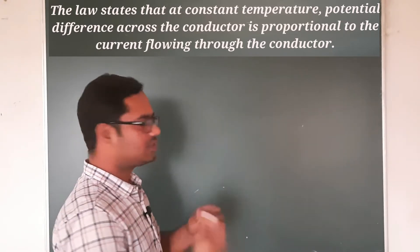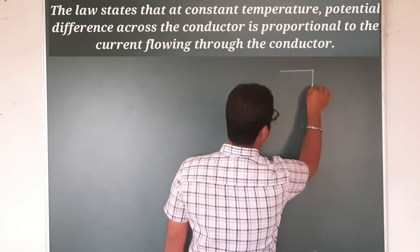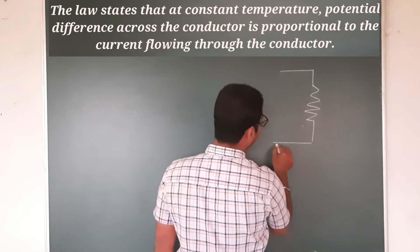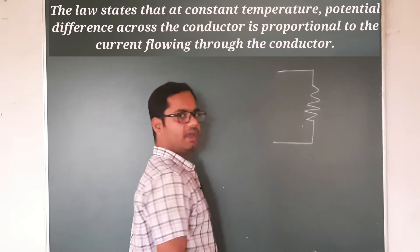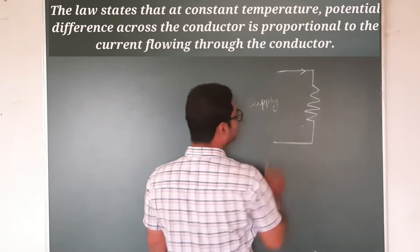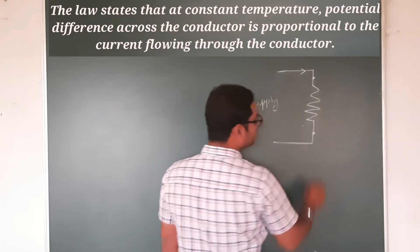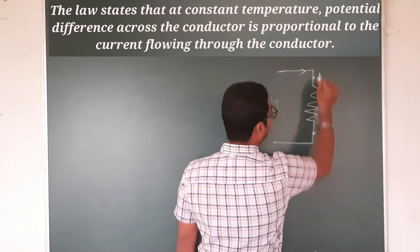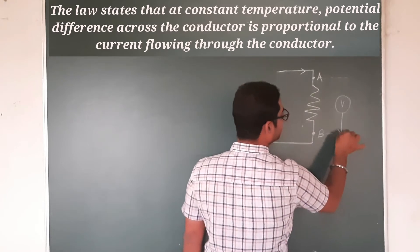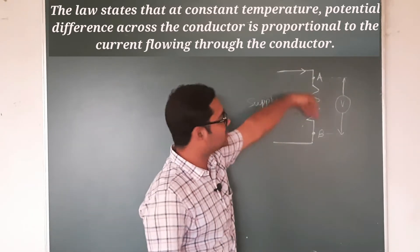To explain this statement and how it is related, consider this circuit. We have applied a supply here, and we want to find out the potential difference between two points. Let this be point A and this be point B. We have to find out the potential difference across A and B, and that potential difference is directly proportional to the current passing through that conductor.